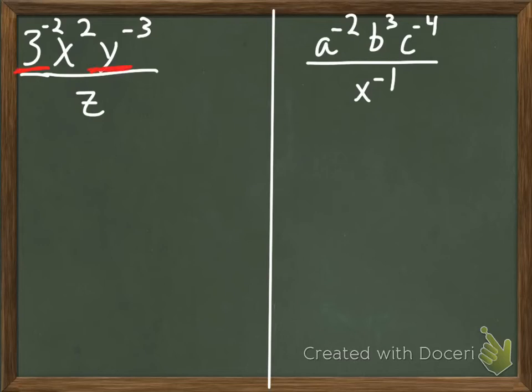It's 3 to the negative 2nd, it's y to the negative 3rd. Our x squared is fine. Our x squared is a positive. So because it's positive, we don't have to worry about it.